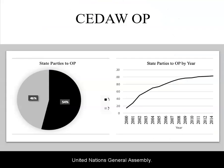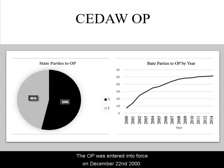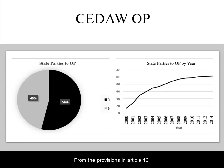The United Nations General Assembly adopted the CEDAW Optional Protocol on October 8, 1999. The OP was entered into force on December 22, 2000, per the provisions in Article 16.